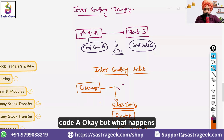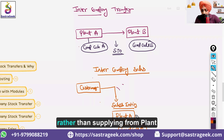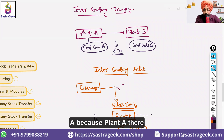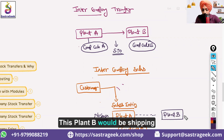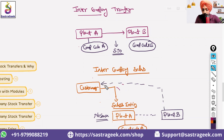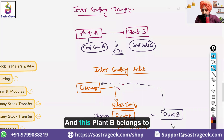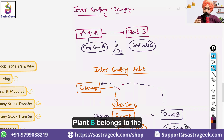Plant A belongs to Company Code A, but what happens when you don't have stock at Plant A? The entity says it would be better to ship from Plant B rather than supplying from Plant A, since there is no stock there. Plant B would be shipping the stock to the customer, and Plant B belongs to Company Code B.